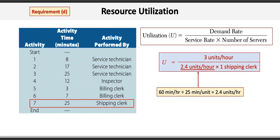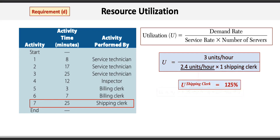For the shipping clerk, we take the 3 unit per hour demand rate divided by the service rate of 2.4 units per hour — calculated as 60 minutes divided by 25 minutes of activity time — multiplied by 1 clerk, giving 3 divided by 2.4, or 125% utilization. The bottleneck is the job with the highest utilization; in this process it's the shipping clerk at 125%. Adding another clerk would cut the utilization in half to 62.5%. Knowing the utilization rate of every job in a process helps us determine where the bottlenecks are and where pressure in the system can be released.